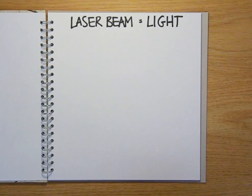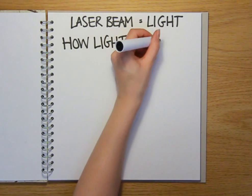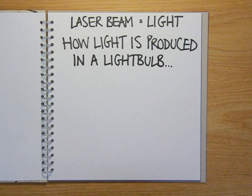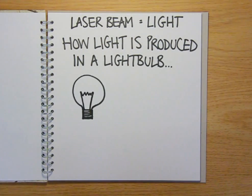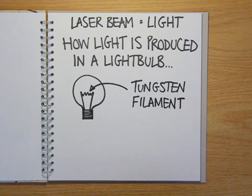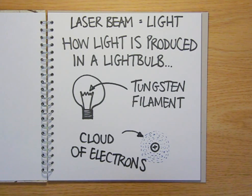A laser beam is actually a special form of light. So first of all, let's think about how light is produced normally. We'll use a light bulb as an example. The filament of a conventional bulb is made up of the metal tungsten. And around each of the tungsten atoms is a cloud of electrons.